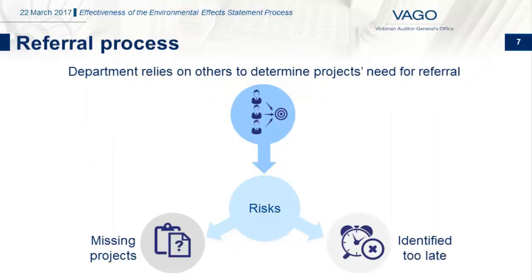There is no statutory requirement to refer development projects when they may potentially have a significant effect on the environment. Despite this, the Department has not established a robust process for identifying projects for referral. As a consequence, it relies on its networks to inform it of upcoming projects that should be referred. There is a risk that the Department may miss projects that should be referred, or might identify them too late to activate the EES process.